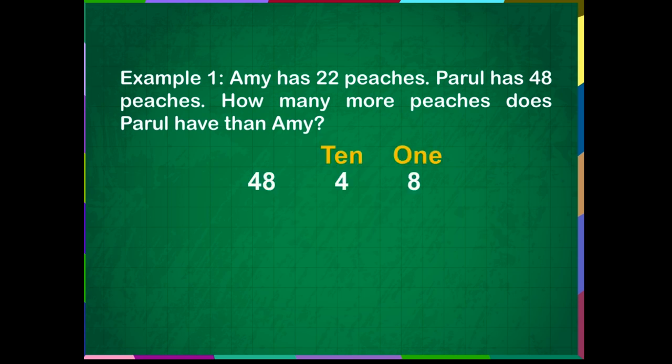48 is equal to 4 tens and 0 ones. 22 is equal to 2 tens and 2 ones.